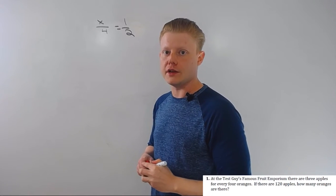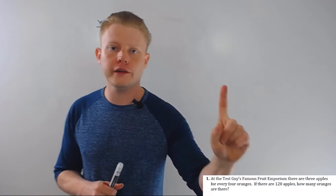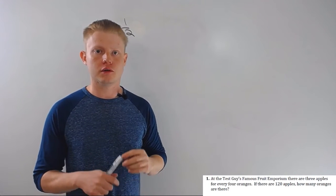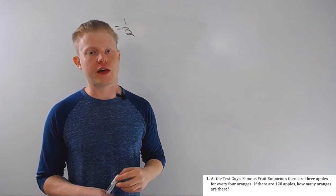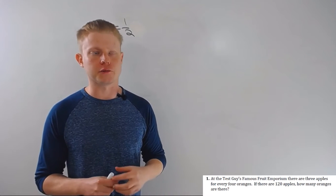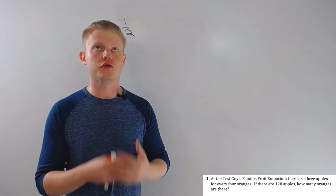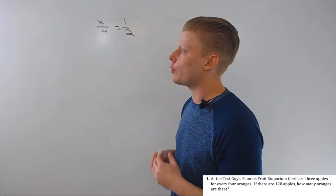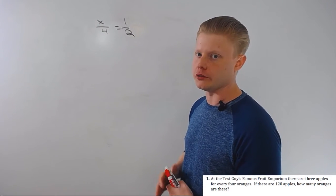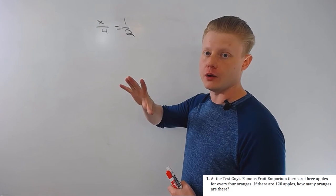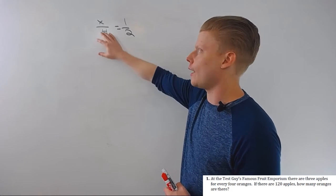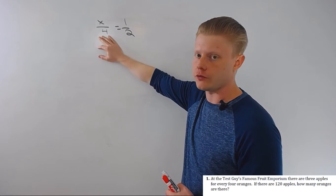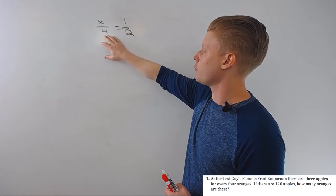Proportions are king on the ACT. If I can only have you learn one pre-algebra topic, it would be proportions. It's critical - it absolutely is. Shows up all over the pre-algebra section, shows up in similar triangles, a few other places. So proportions are just two ratios set equal to each other. In the last video on ratios, we talked about how ratios are fractions, ratios are relationships, ratios are fractions. So this is a proportion: two fractions that are equal to each other.